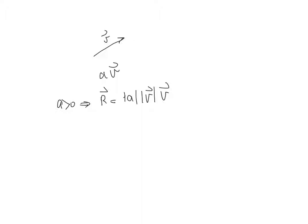So if you multiply the vector V with a constant A, which is a positive number, you're going to get a vector which is in the same direction as V. But the magnitude is going to be the magnitude of V times the absolute value of A, which is going to be positive, because A we are assuming is positive.